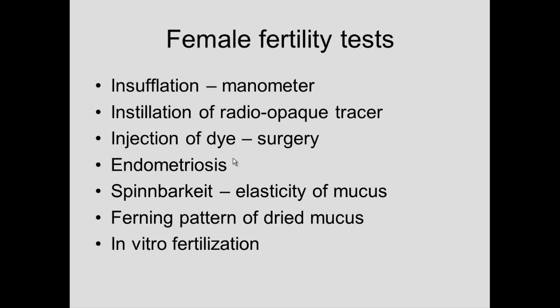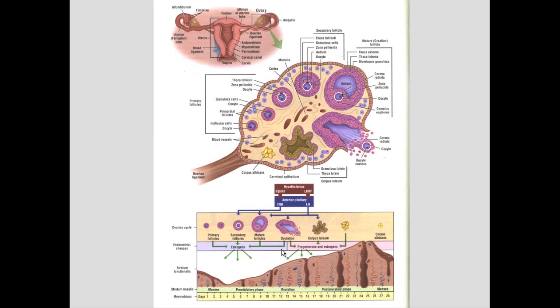Another problem with the female reproductive tract involves the cervix. To look at cervical mucus, you examine its spinnbarkeit — the elasticity of the cervical mucus. You can stretch cervical mucus to see if it's pliable and typical of what it should be. Also, the ferning pattern: if you take cervical mucus, put it on a slide, and it has had the proper hormonal influences, it will dry in a ferning pattern. If the cervical problem can't be overcome, there's always in vitro fertilization — you can slip a pipette through the cervix and inseminate the uterus.